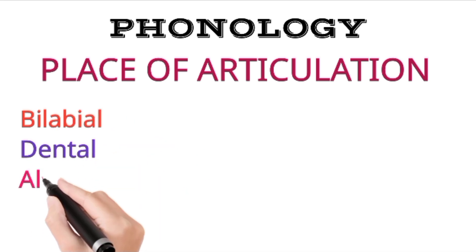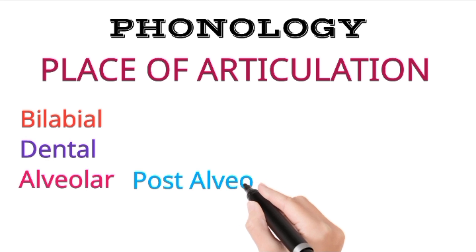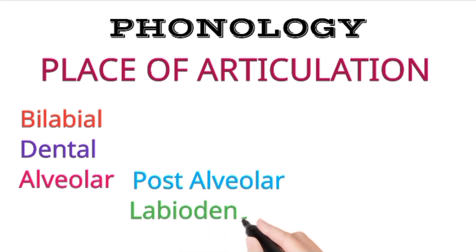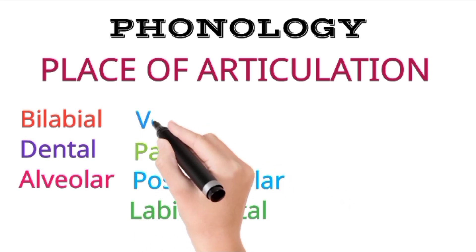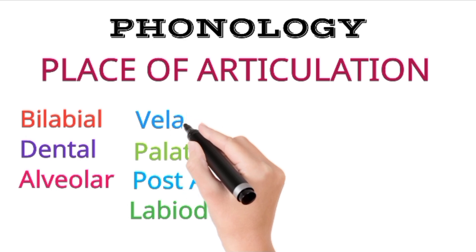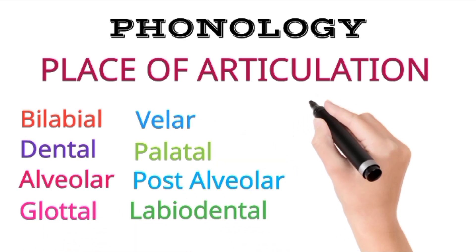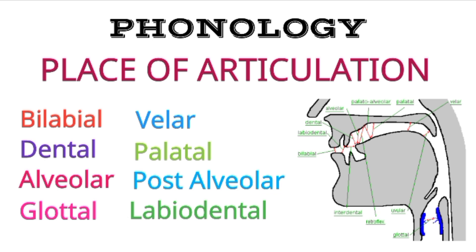There are different places of articulation, known as bilabial, dental, alveolar, velar, postalveolar, labiodental, and glottal. We will discuss all of them in detail along with examples. If you are new to my channel, please subscribe to Lima's English Corner for further English grammatical and educational videos.